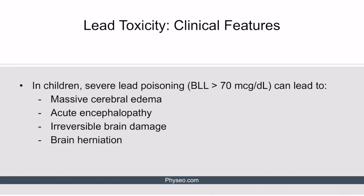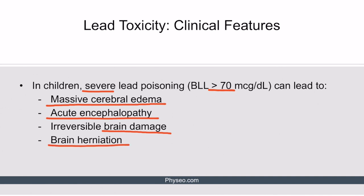In children specifically, acute severe lead poisoning with blood lead levels over 70 can be particularly dangerous as it can lead to accumulation of high levels of lead in the brain, causing fluid accumulation and massive cerebral edema. This in turn can lead to acute encephalopathy, irreversible brain damage, and even brain herniation, which would be fatal.